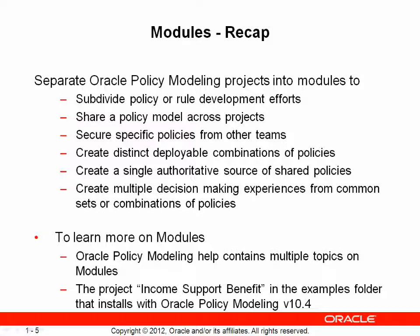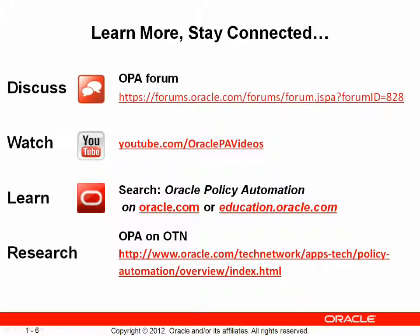To learn more specifically on modules, the Oracle Policy Modeling Help contains multiple topics, and the project Income Support Benefit ships in the example folders of the Oracle Policy Modeling version 10.4 install. Thank you for viewing this segment of the Oracle Policy Automation series. To learn more and stay connected with the OPA community, discuss OPA on the Oracle Policy Automation forums, watch more videos on the Oracle Policy Automation YouTube channel, and learn more from oracle.com or find courses on education.oracle.com, as well as research OPA on the Oracle Technology Network.